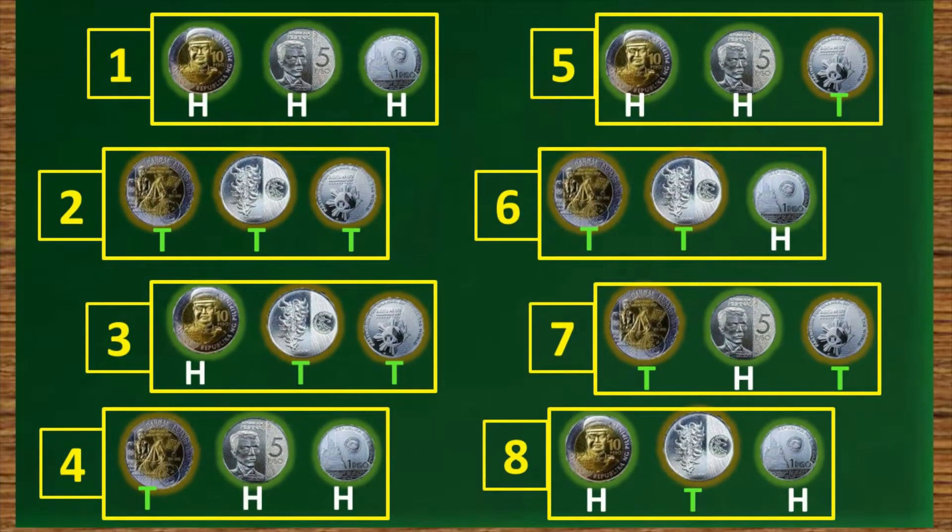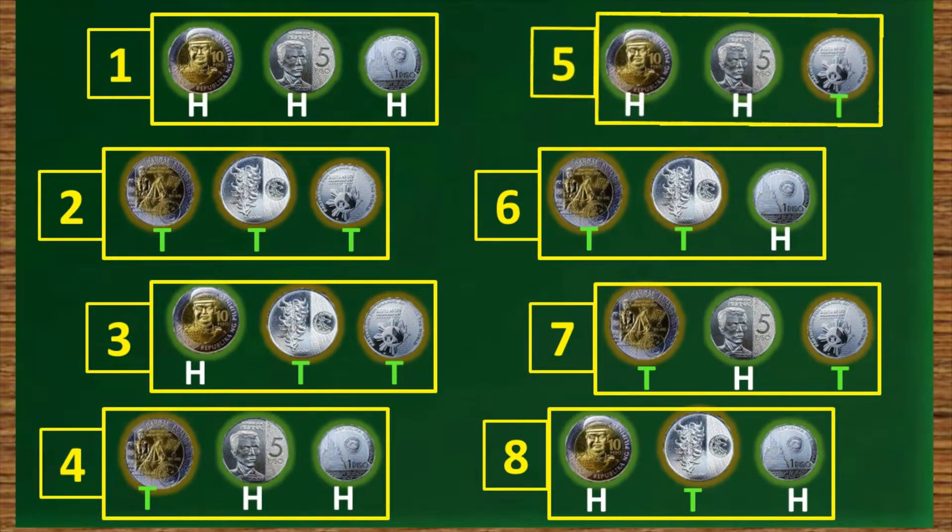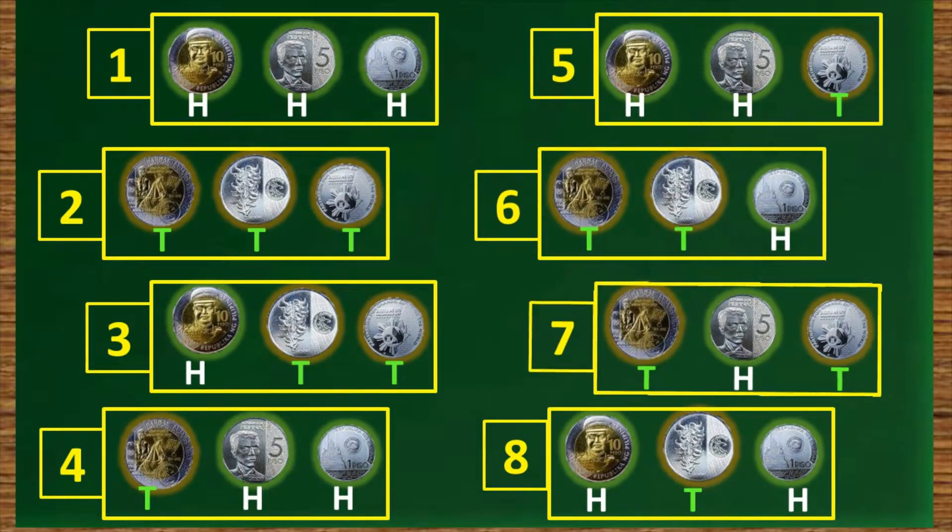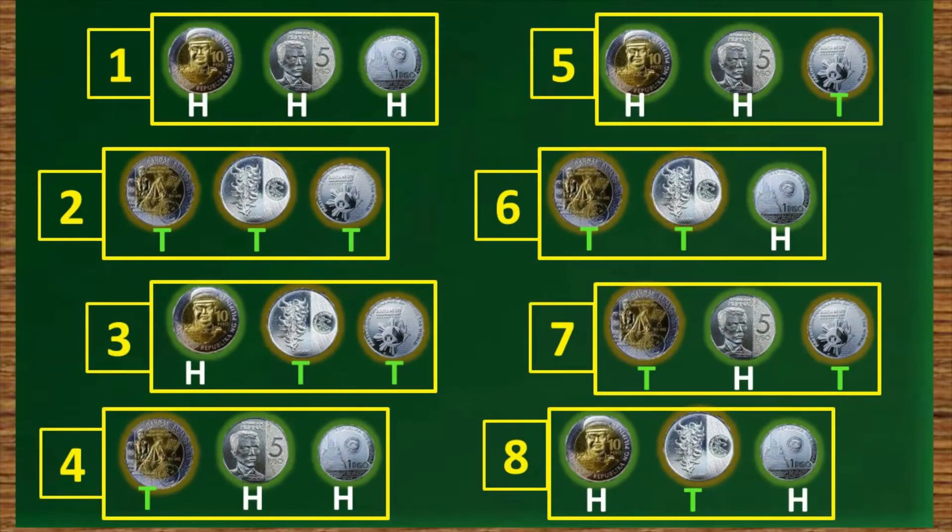To prove if it's correct, let's have all the possible sets. All coins in head, all in tail, only 10 in head, only 10 in tail, only 1 is tail, only 1 in head, only 5 in head, and only 5 in tail, for the total of 8 possible outcomes.